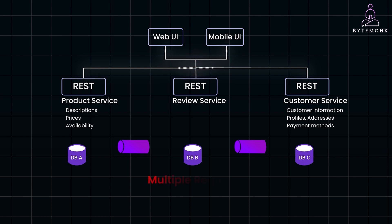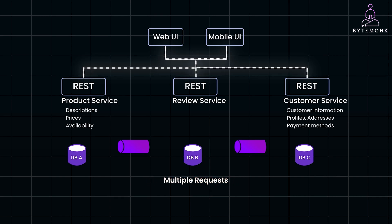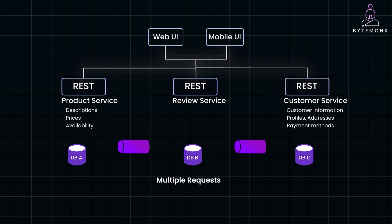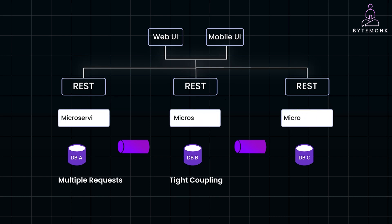The client has to make several requests to different services to gather all the necessary data. For example, if the product page needs information from the product, review, and customer services, the client must make three separate API calls. Each of these calls adds latency, making the user wait longer for the page to load. Furthermore, the client becomes tightly coupled to the internal microservices architecture — it needs to know exactly which service to call and what each service's API looks like. If you need to change the internal architecture, say by splitting a service into smaller ones or merging services, the client code must also be updated. This lack of encapsulation makes the system brittle and harder to maintain.